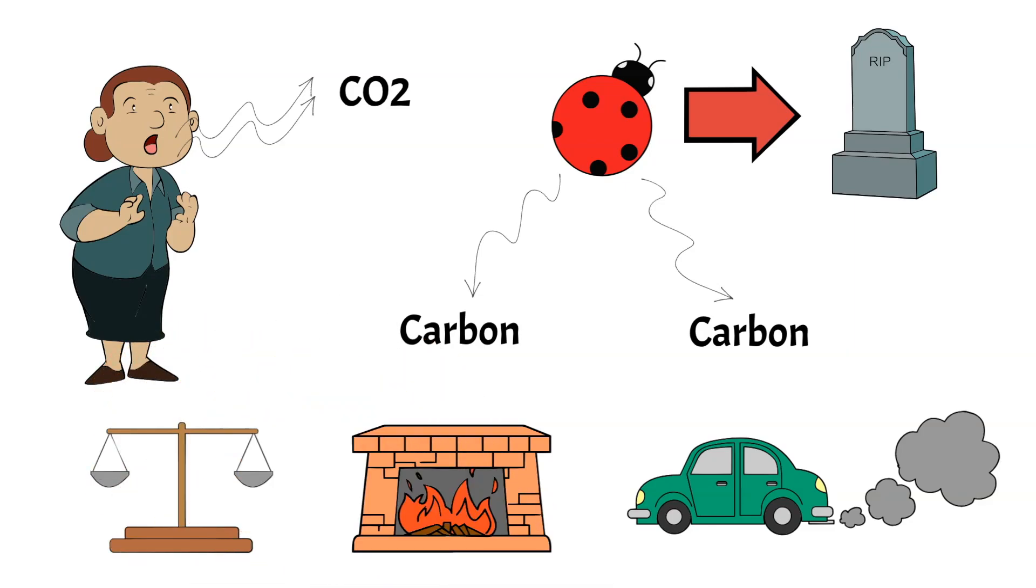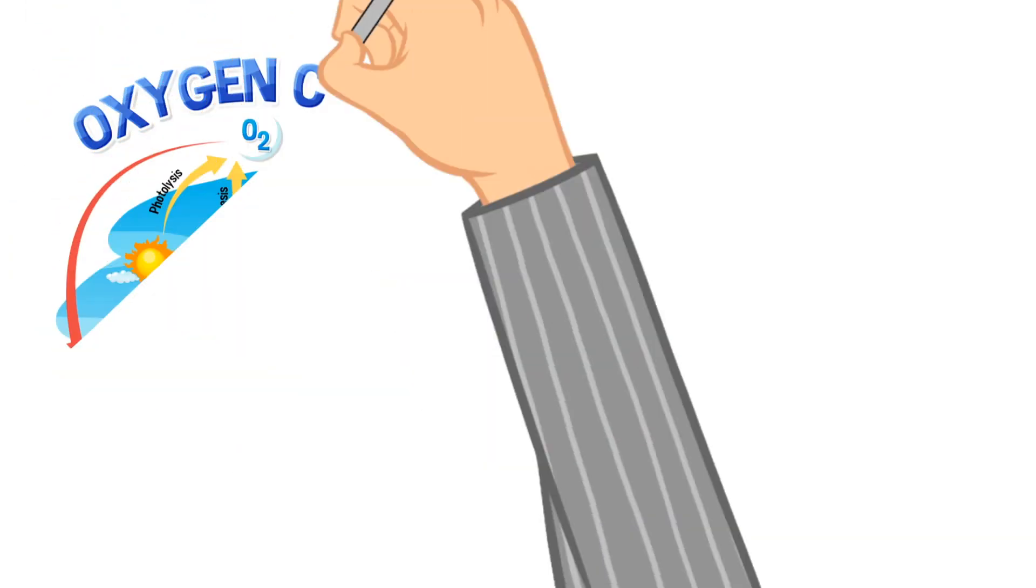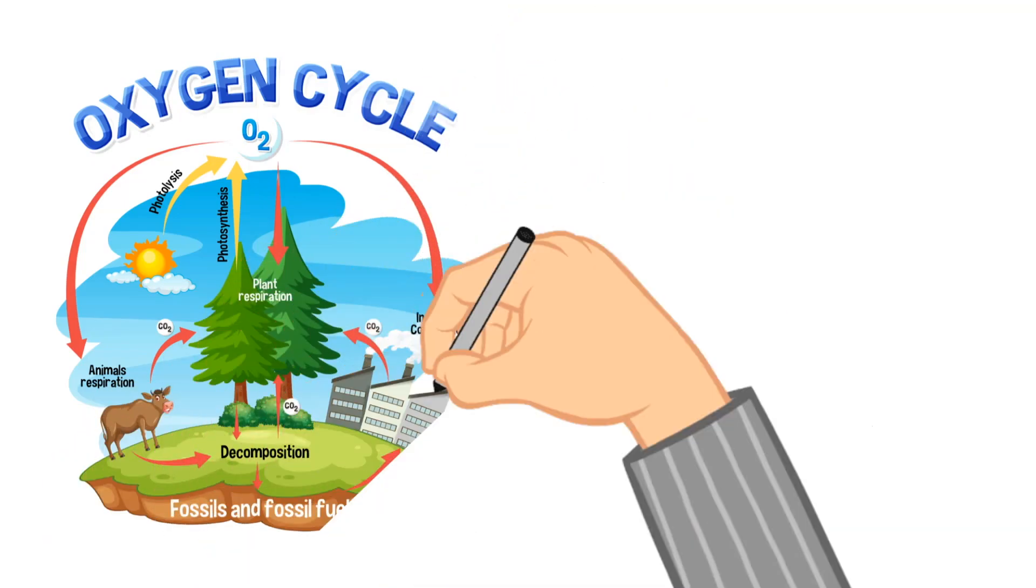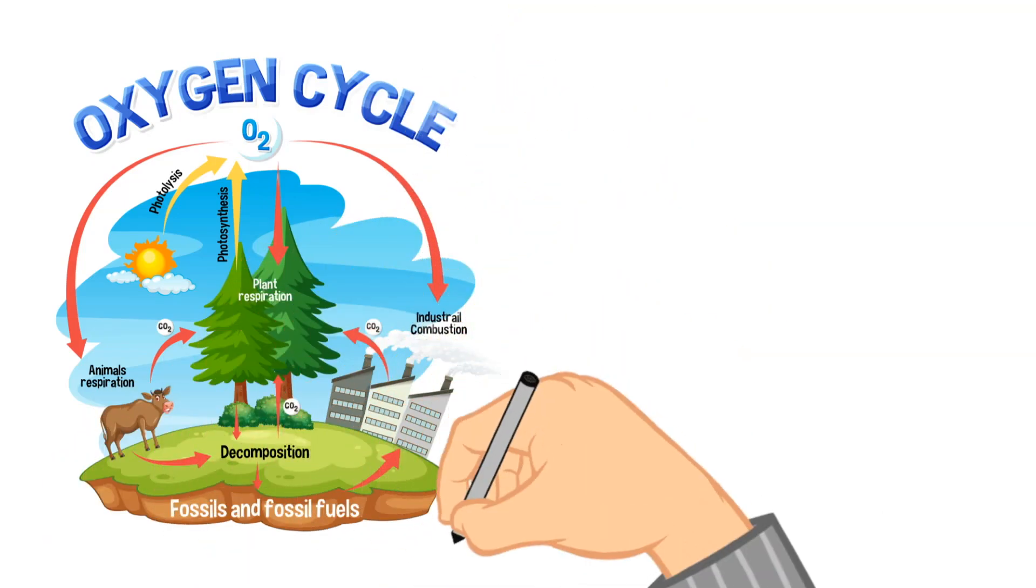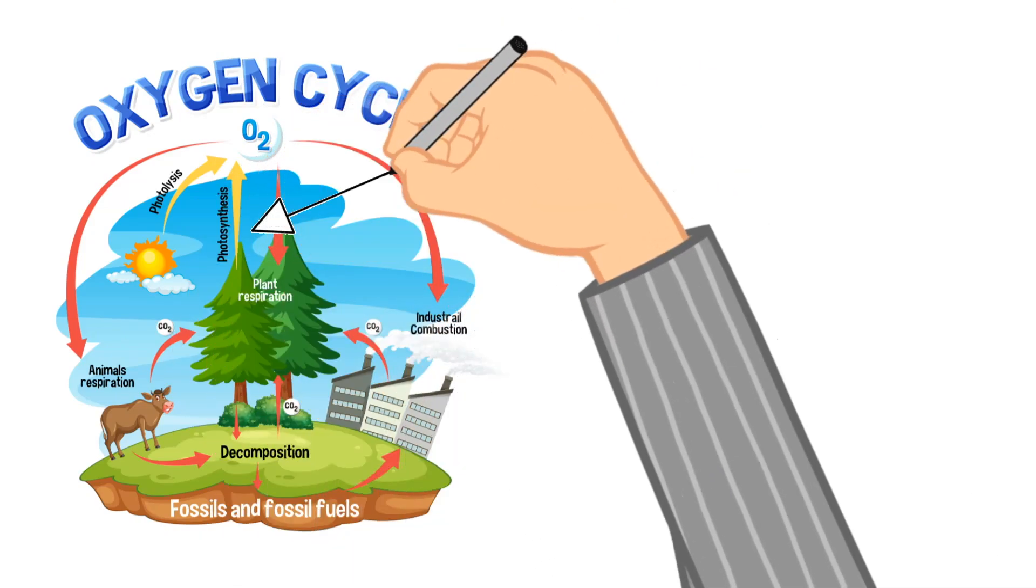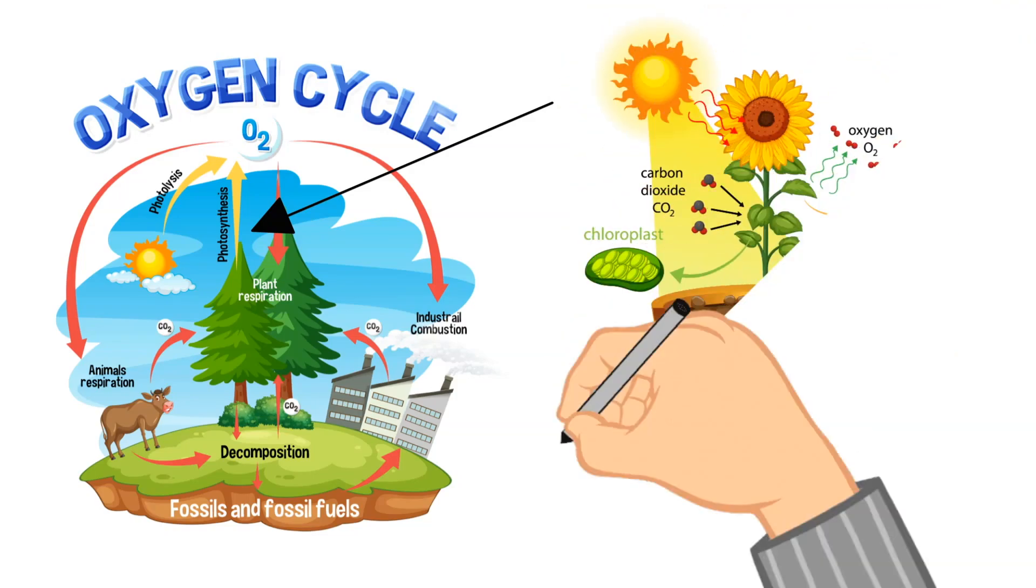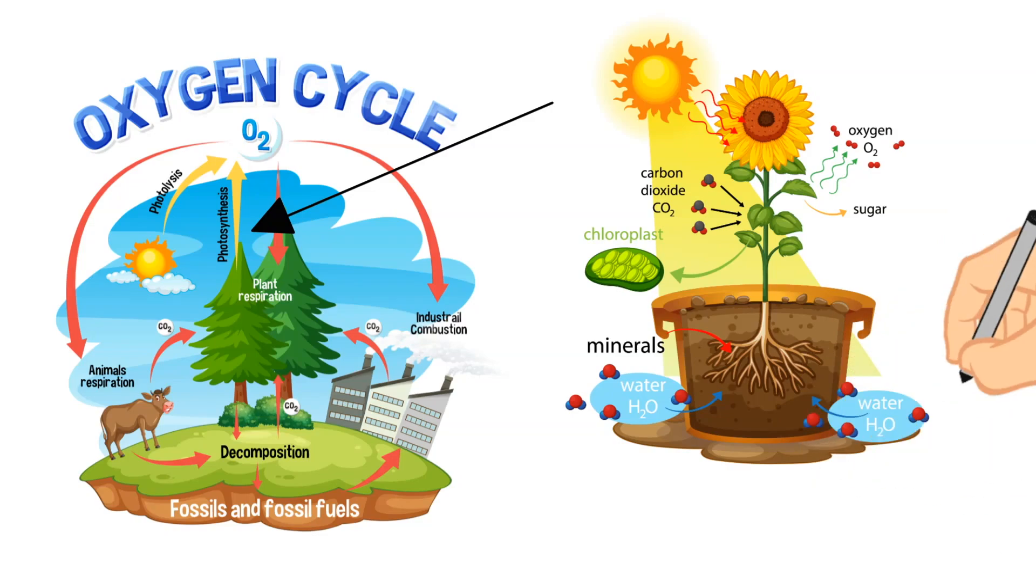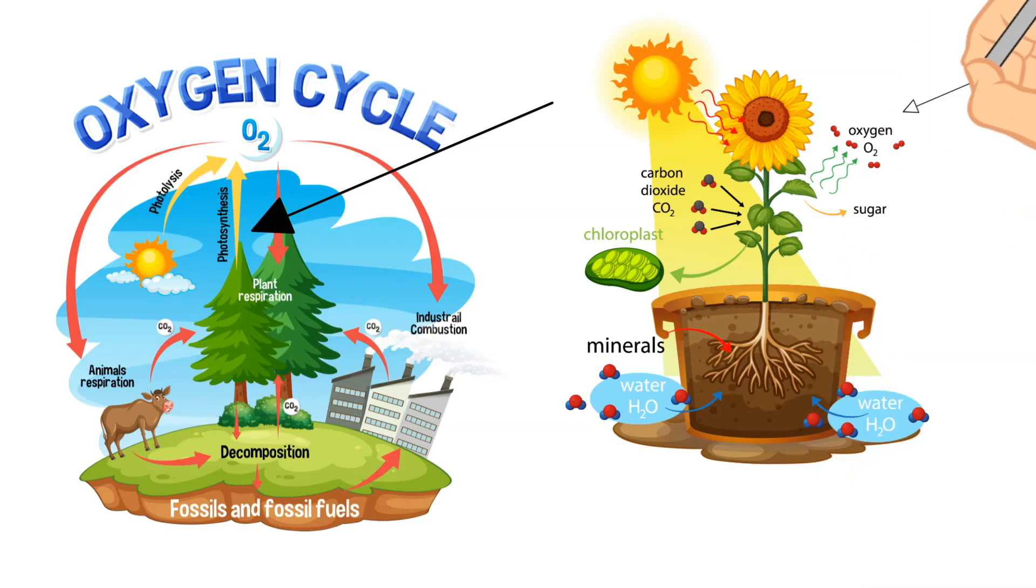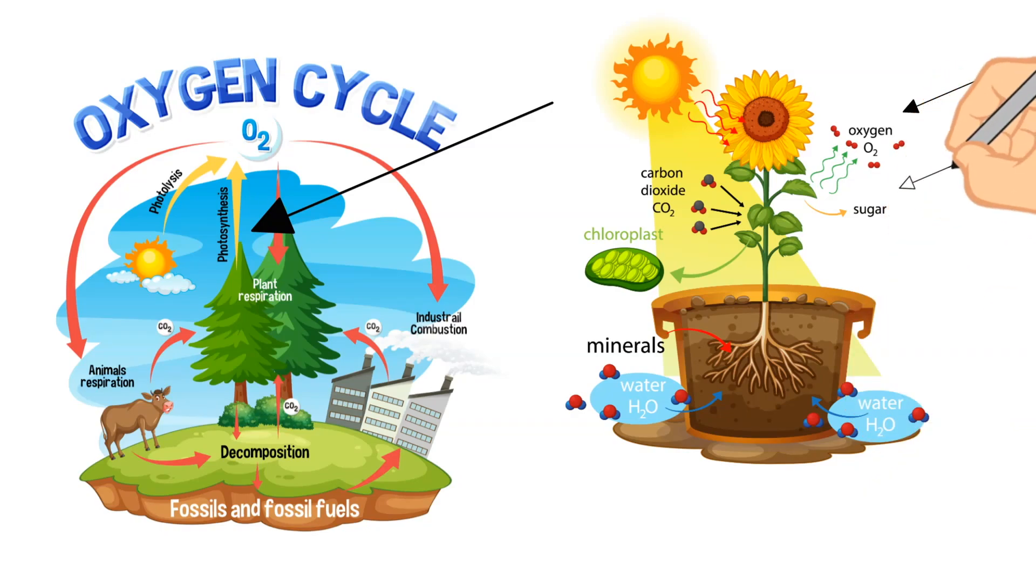Now let's talk about the oxygen cycle because it is so tied into the carbon cycle. Oxygen is also constantly being used and created by different processes. An example is through photosynthesis as well. So when plants take in sunlight, water, and carbon dioxide, they create oxygen and sugar. And so in this way you can see how the carbon and oxygen cycle are interconnected.